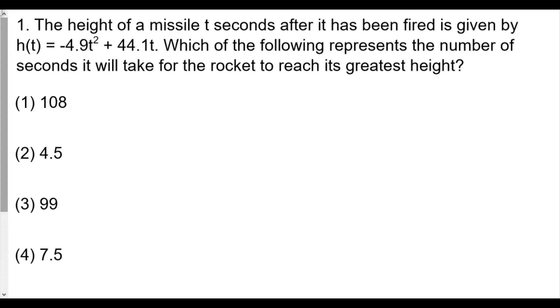For number one, the height of a missile t seconds after it's been fired is given by h(t) = -4.9t² + 44.1t. Which of the following represents the number of seconds it will take for the rocket to reach its highest height? In these quadratic function problems, there's really two things you're looking out for.